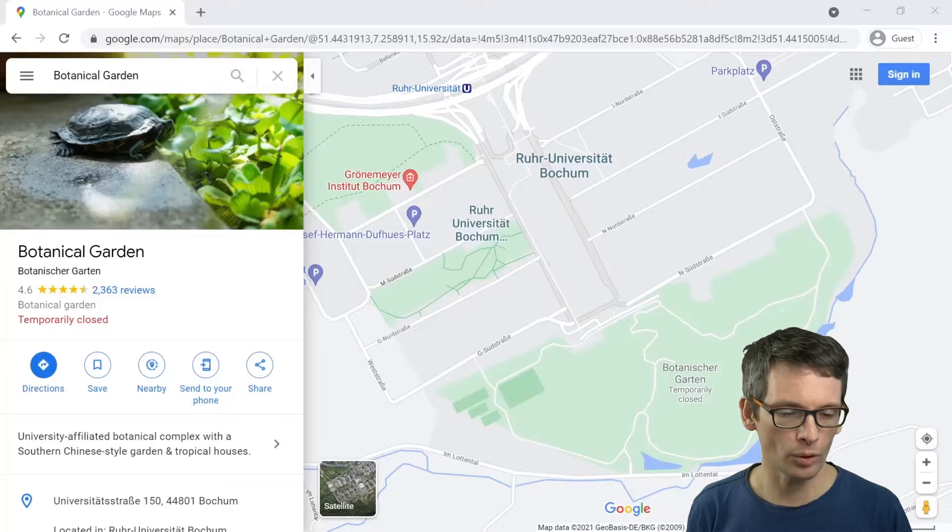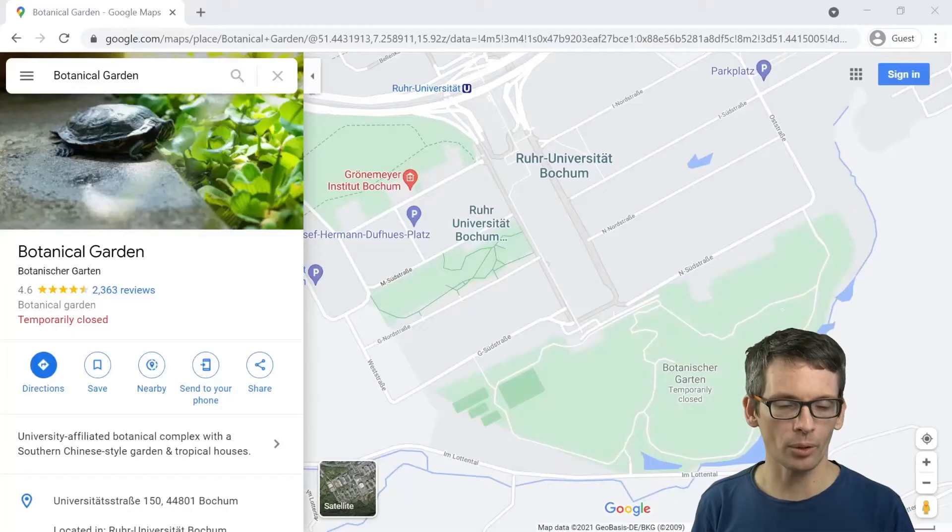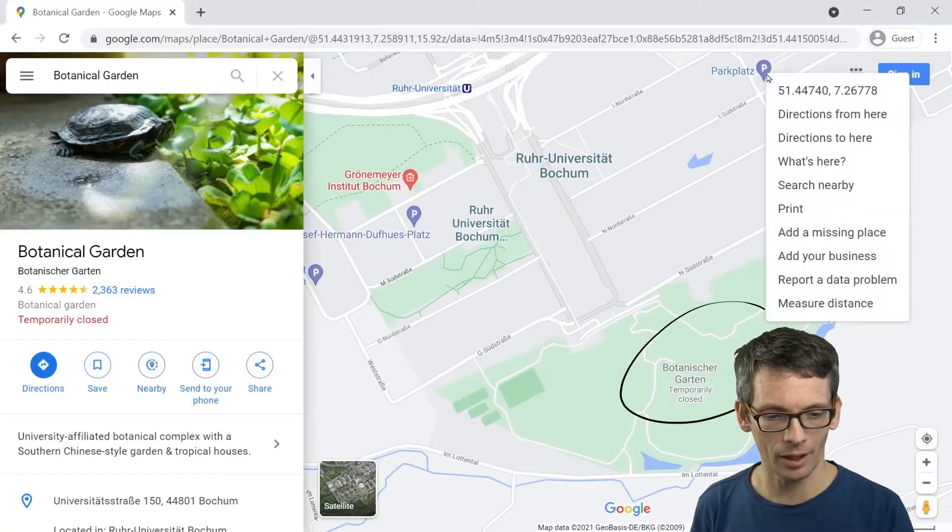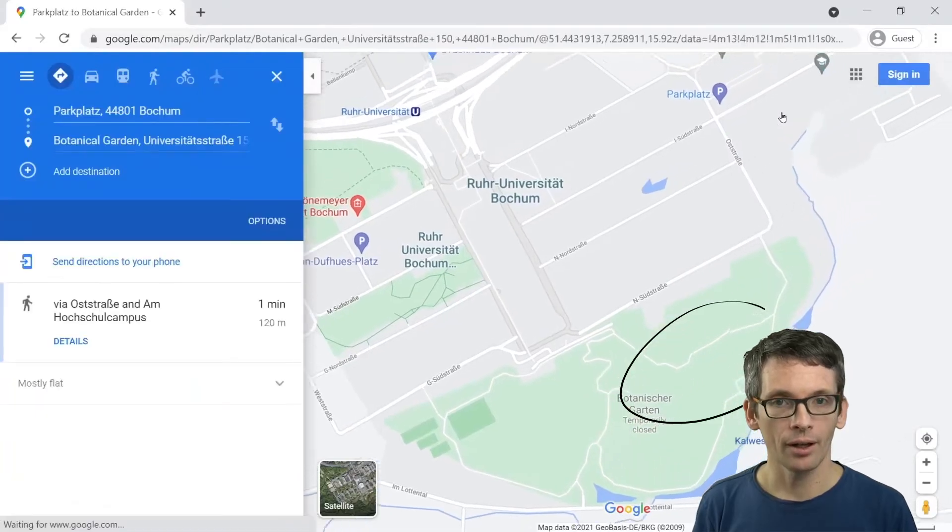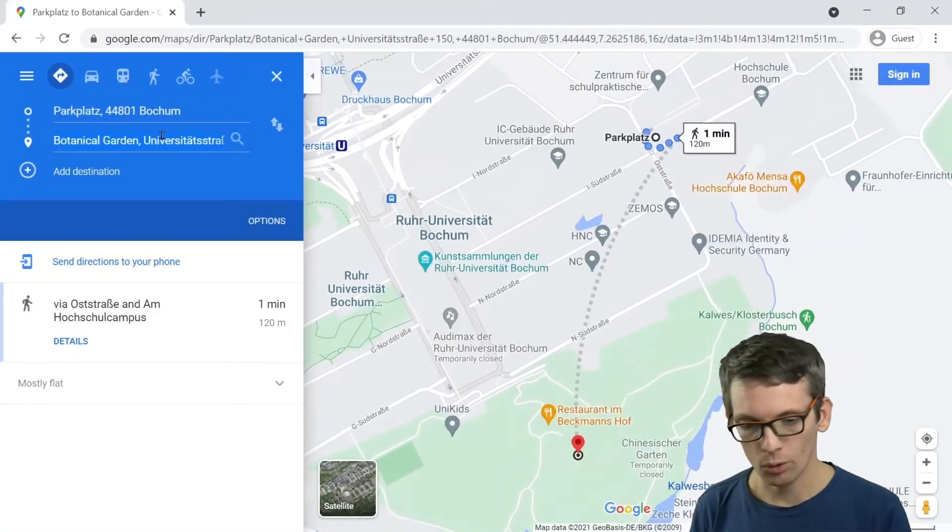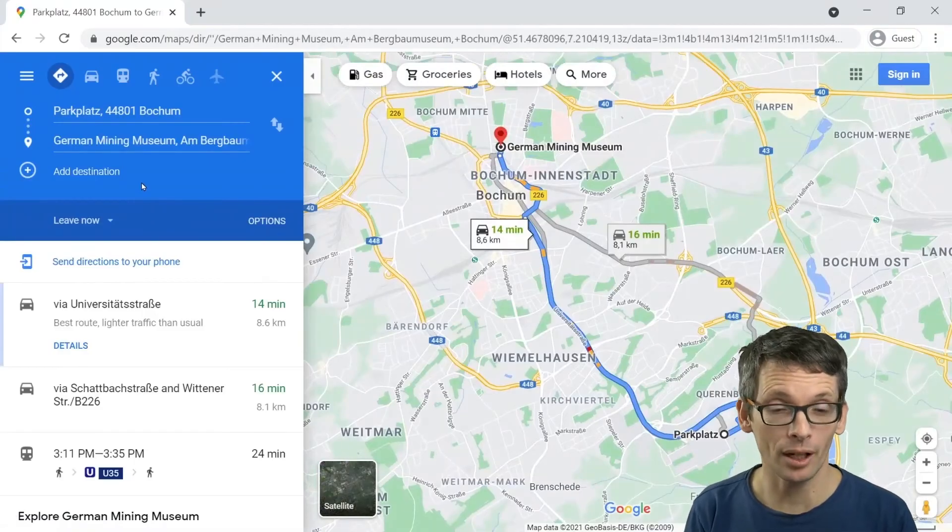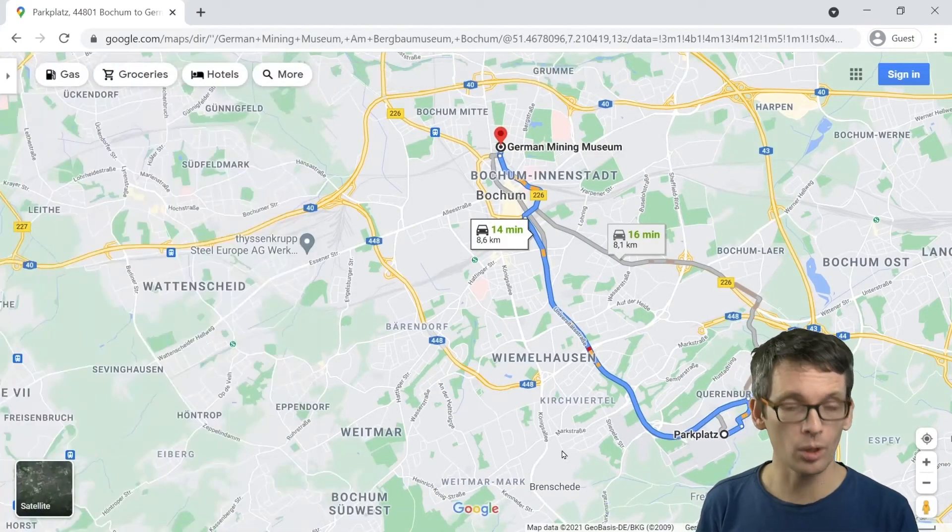As an example I want to find a route in my hometown, this is Bochum. Let's assume I just did a nice walk in the botanical garden, I'm now going back to my car, and I want to go to the most famous museum which is the mining museum. The botanical garden is here, my car is standing up there, and now I'm going to route to the mining museum. This is not yet Dijkstra's algorithm, this is simply what Google Maps gives me.